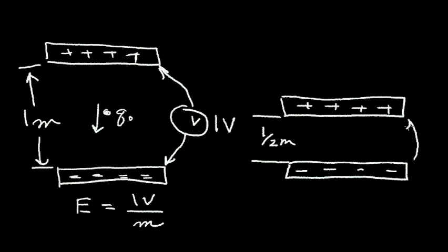And my voltage is still one volt. In this case, the electric field has increased. It is equal to one volt divided by one half of a meter, which is equal to two volts per meter.